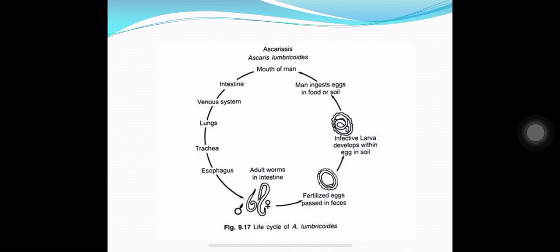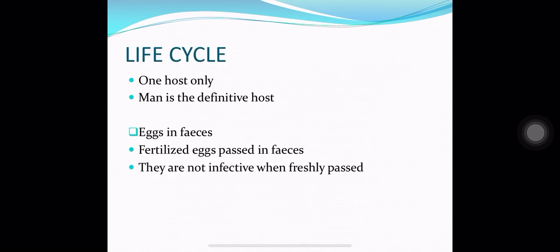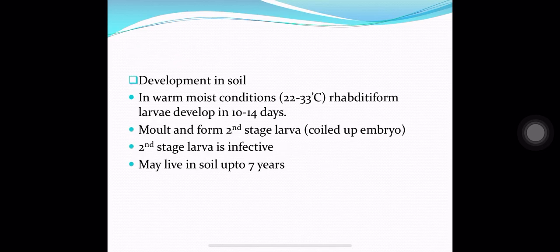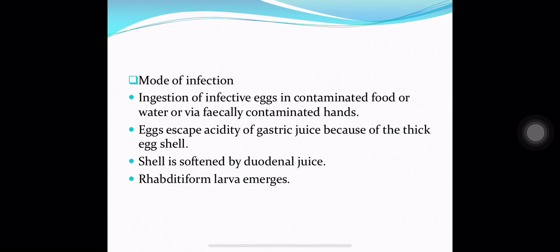Molting takes place during the life cycle. Man is the only host and the definitive host. Fertilized eggs passed in feces are not infective when freshly passed; they undergo development in the soil. Rhabditiform larvae develop in about 10 to 14 days, and second-stage larvae form after some days. The second-stage larvae are infective and can remain alive in the soil for about 7 years before transmitting to a new host.